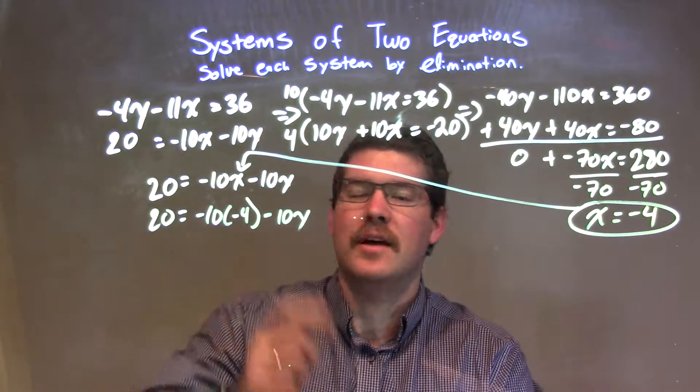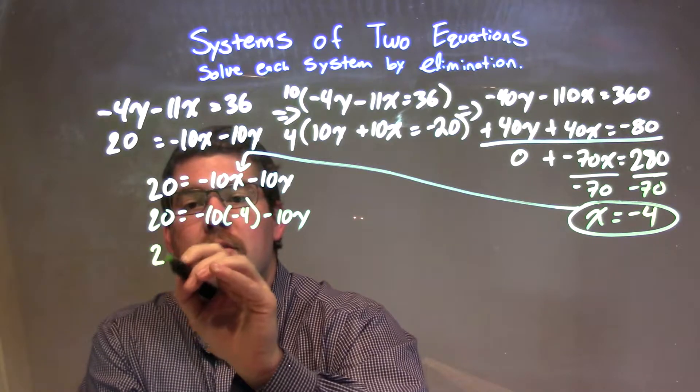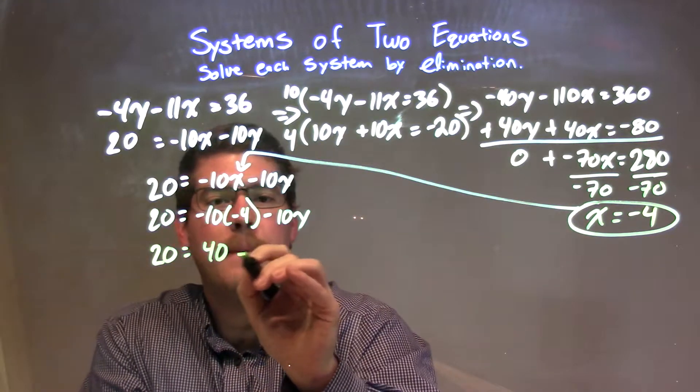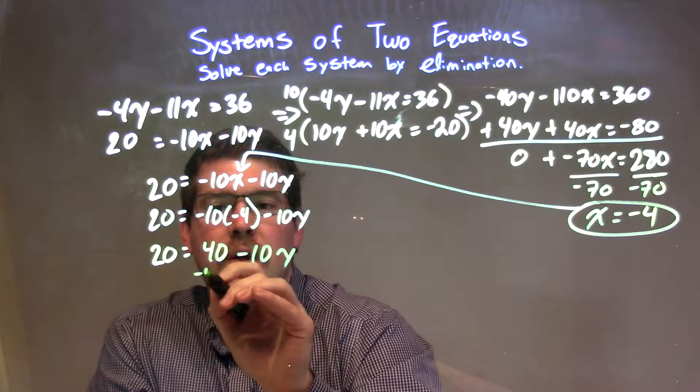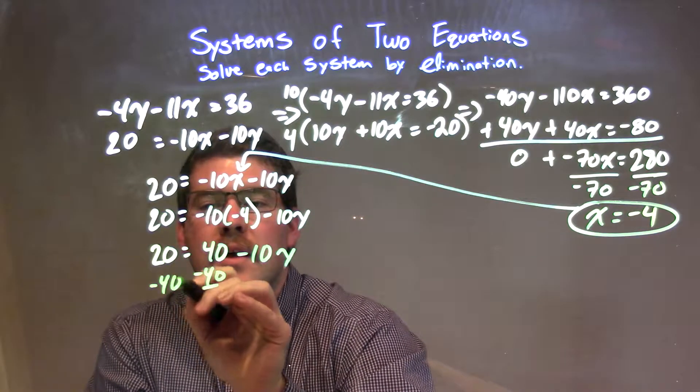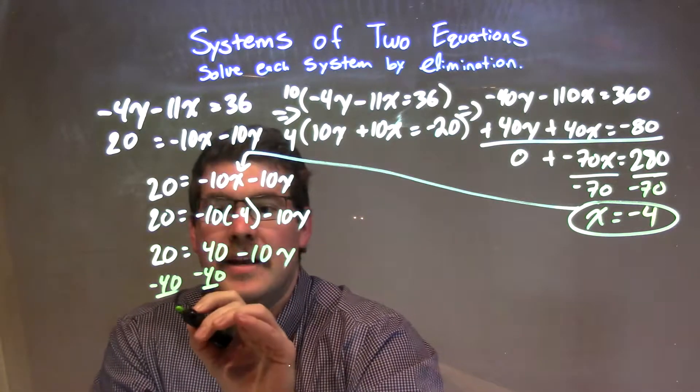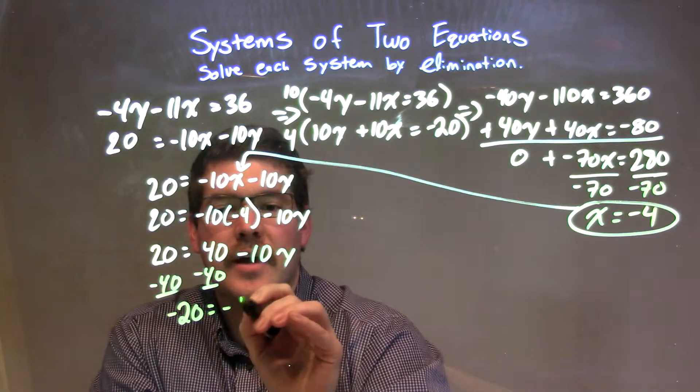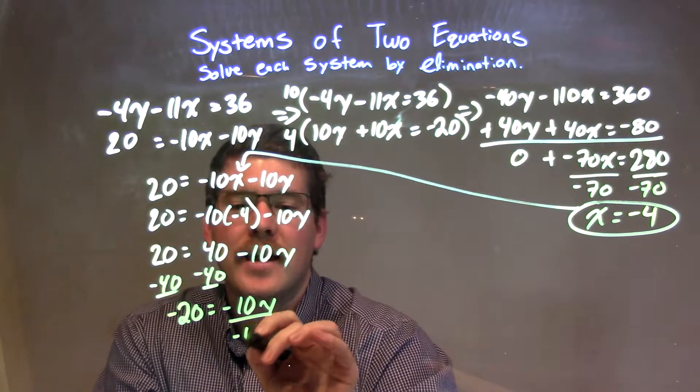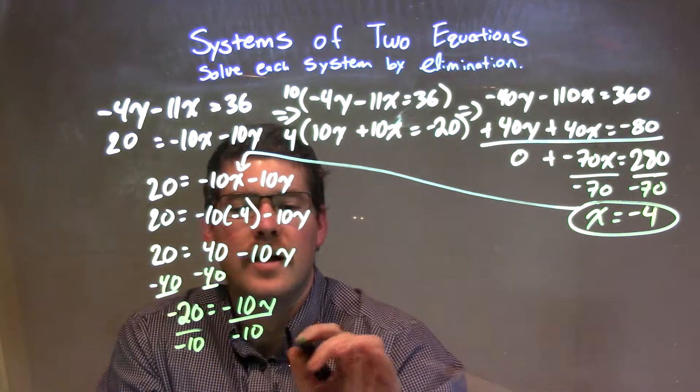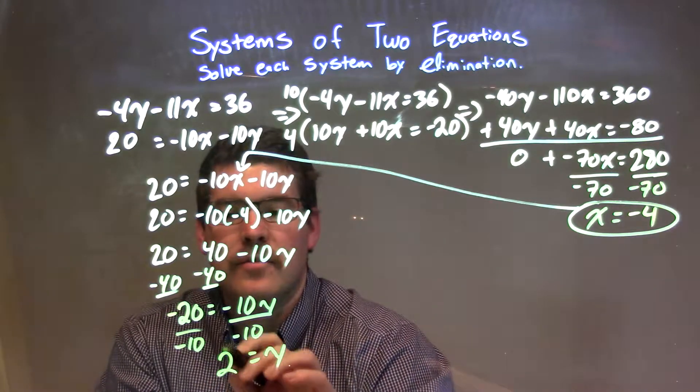Simplify that. Negative 10 times negative 4 is positive 40, so we have 20 equals positive 40 minus 10y. I'm going to subtract 40 from both sides, leaving me with 20 minus 40 to be negative 20, equals negative 10y, divided by negative 10, and y comes out to be positive 2.